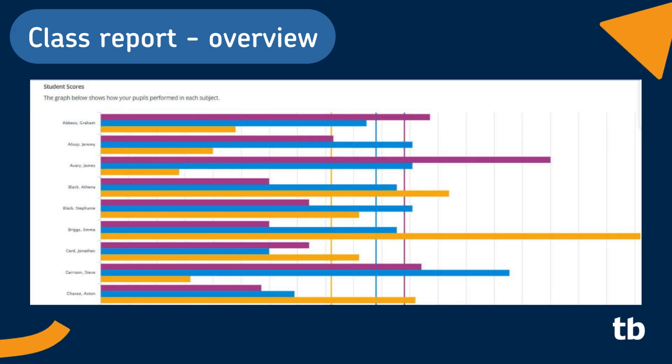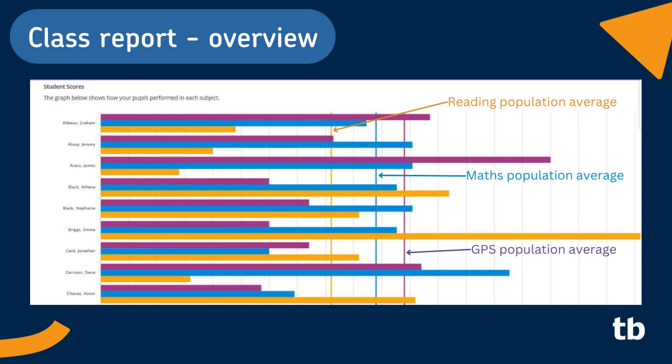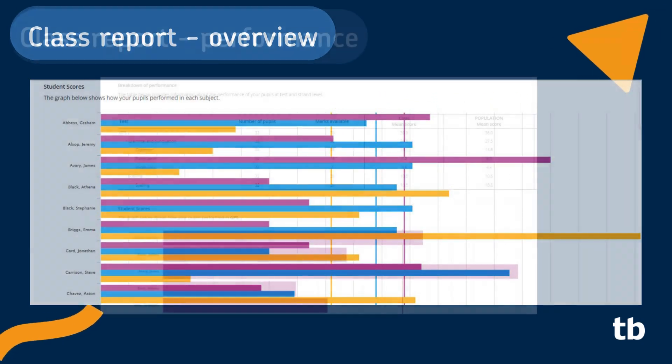The class overview graph provides an overview of your class performance in each subject. You can then compare the bars with the population mean scores to judge whether your pupils are performing at, above or below the population average for the current cohort. This can help inform teacher judgement as to whether or not your pupils are on track to meet the expected standard.